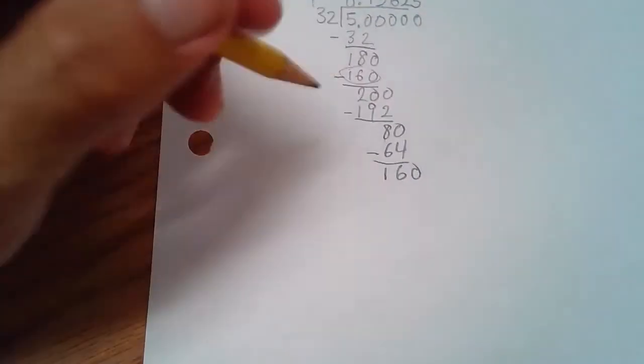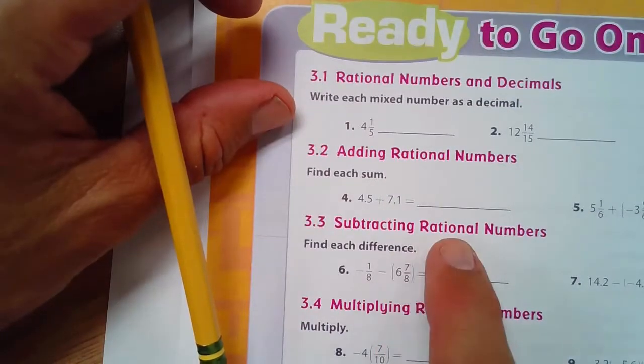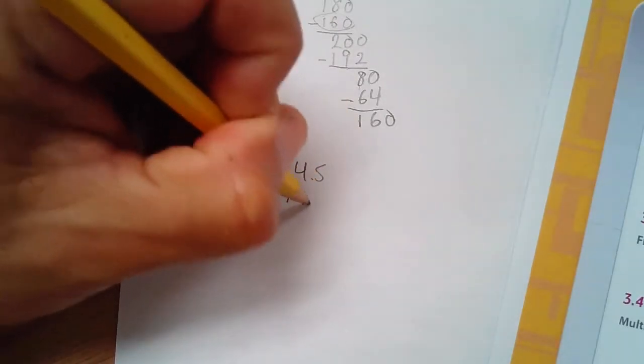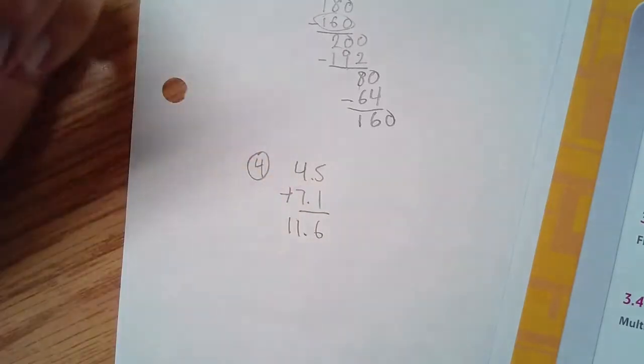Number four. What we have for number four here is 4.5 plus 7.1. Add them up. That's 11.6. It's easy.